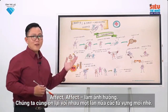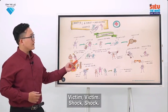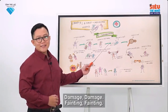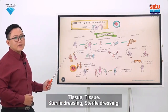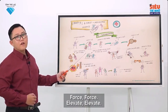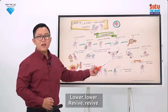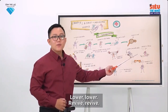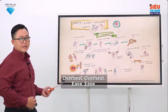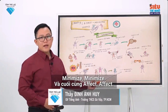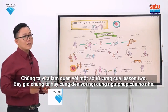Let's review these new vocabularies one more time: victim, shock, damage, fainting, tissue, sterile dressing, force, elevate, lower, revive, overheat, ease, minimize, and affect. We have just gotten used to some vocabulary from Lesson 2.